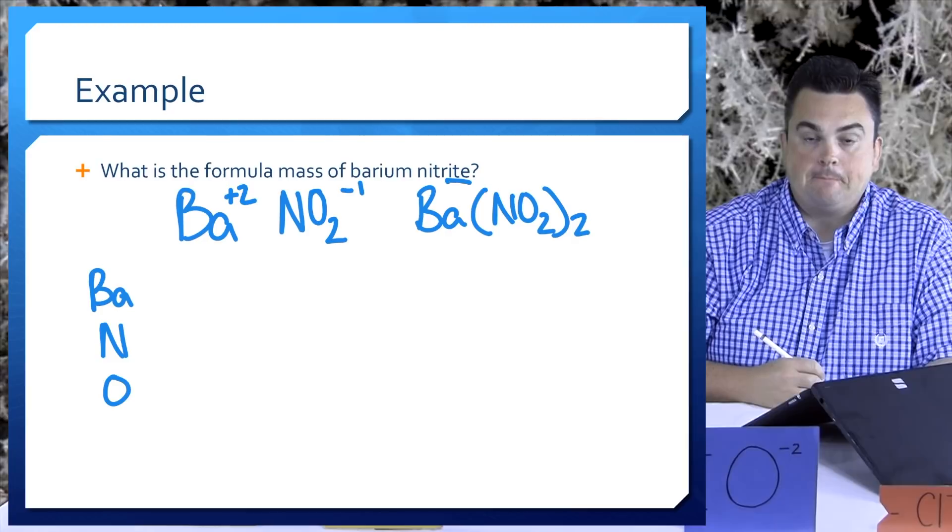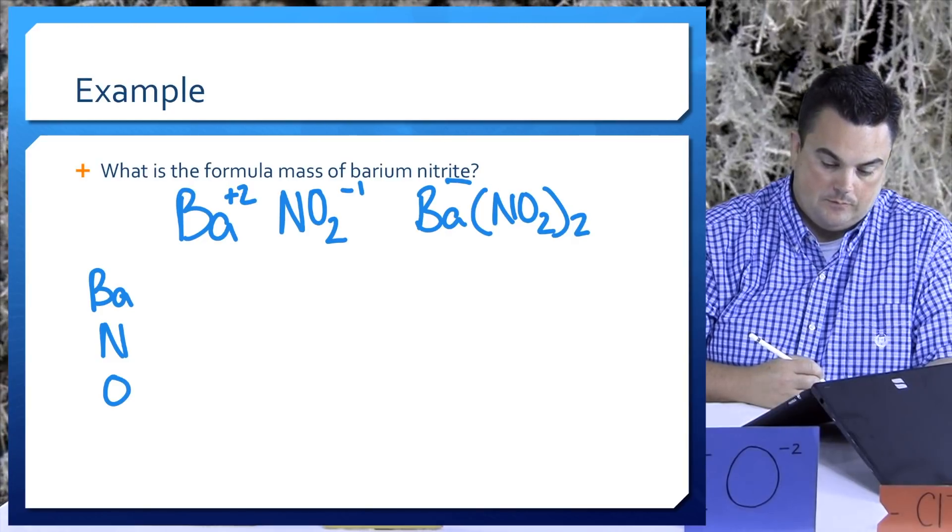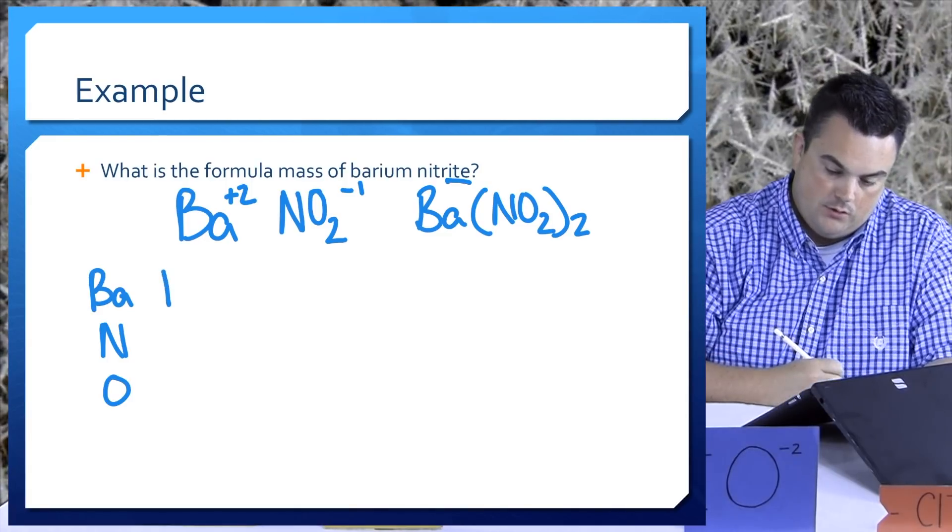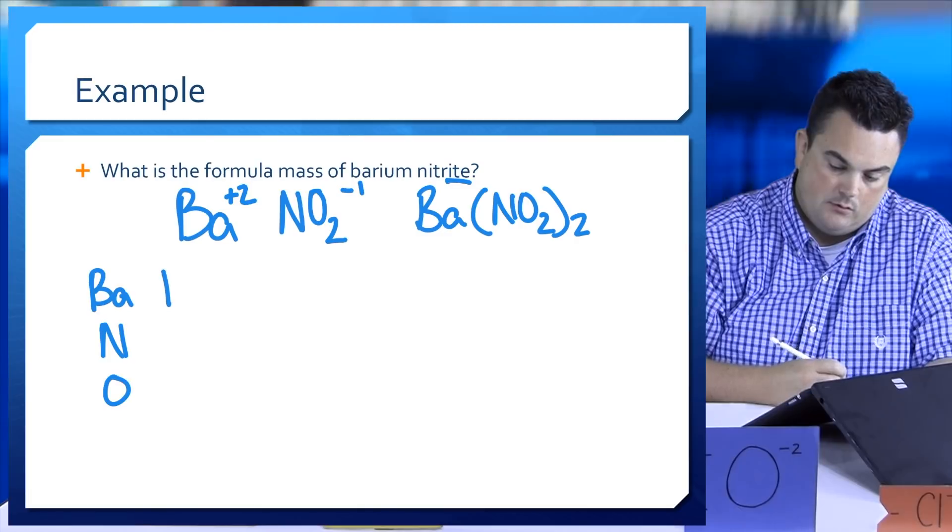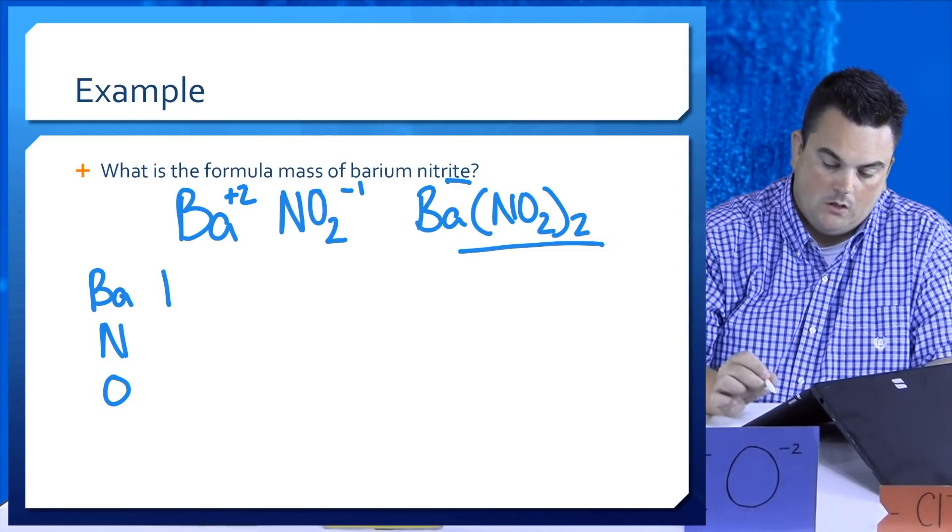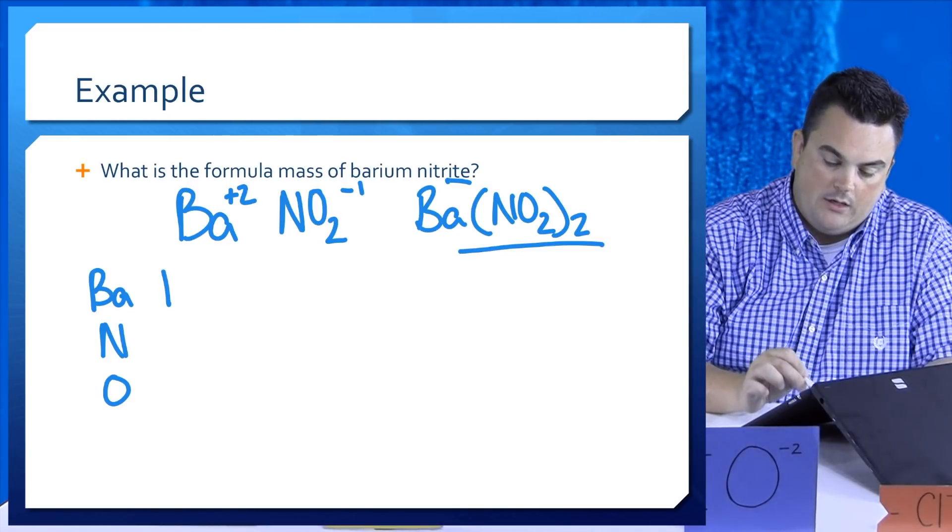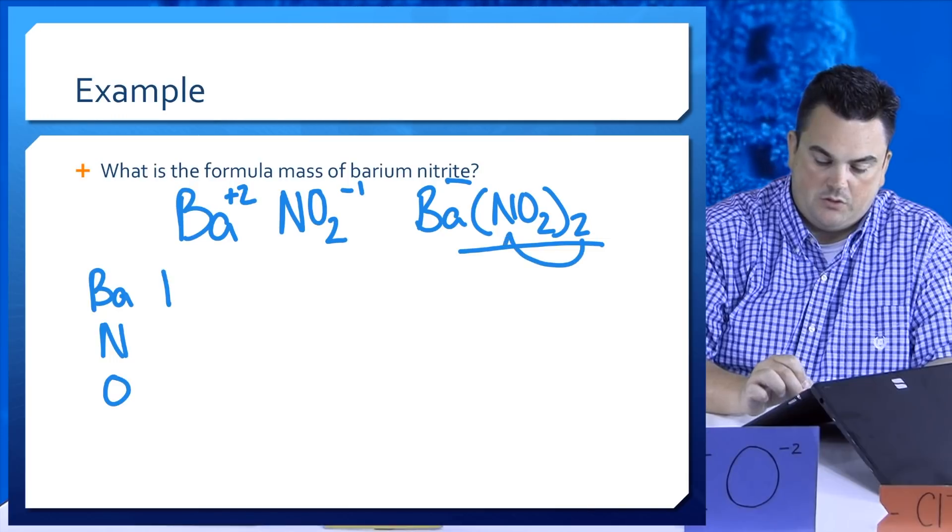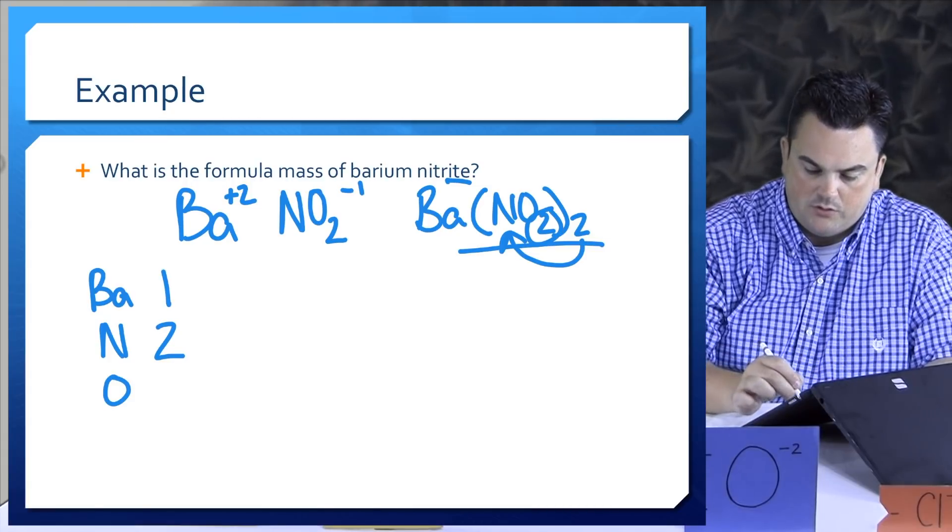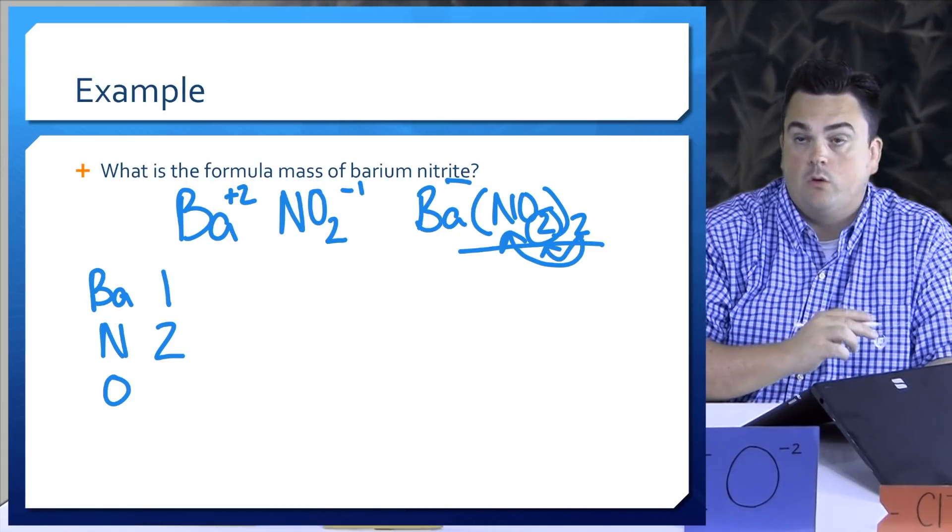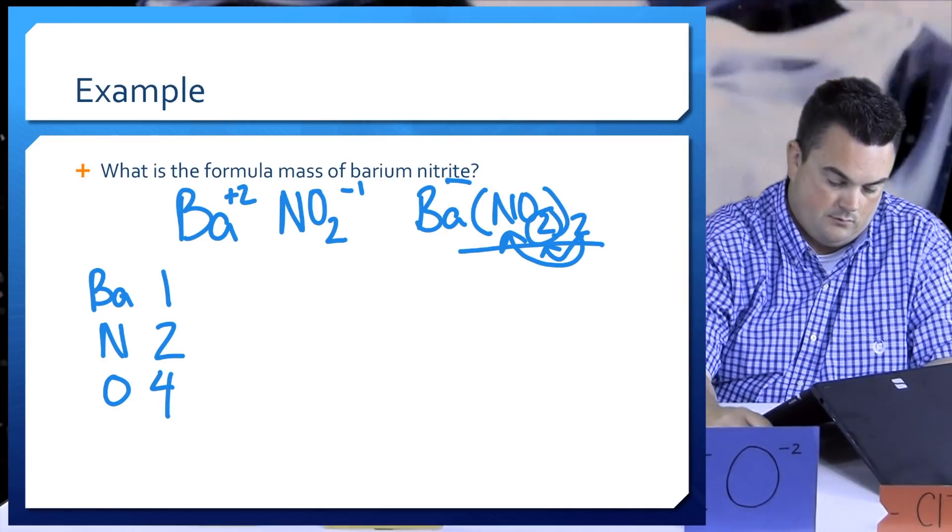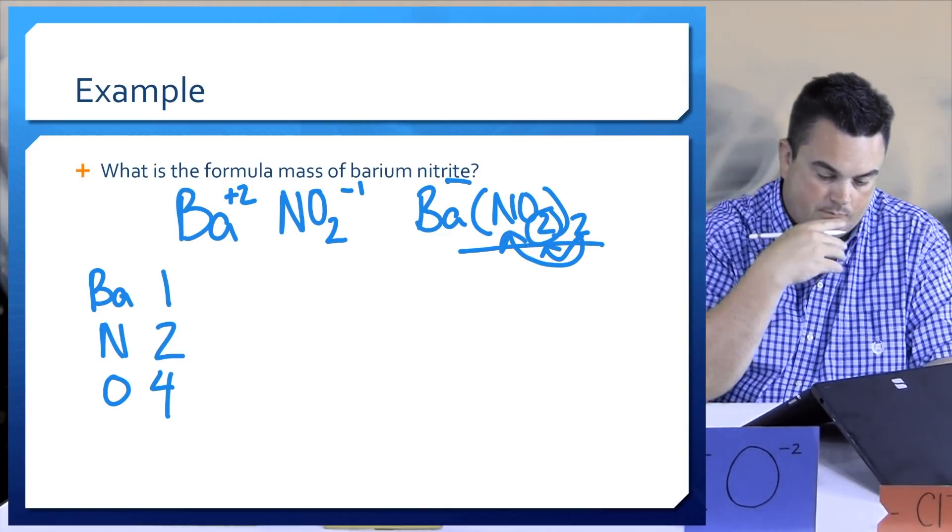We want to next determine the number of atoms in our formula. This is where we have to be careful. Barium is just one. Now with the N and the O, notice they're in parentheses and there's a two outside those parentheses. That means the two applies to everything within the parentheses. Since there's one N inside the parentheses but the two distributes to it, there must be two Ns. And O has two inside the parentheses but if the two distributes to that there must be four total. So be careful with your parentheses. Make sure you're distributing to all elements within the parentheses.